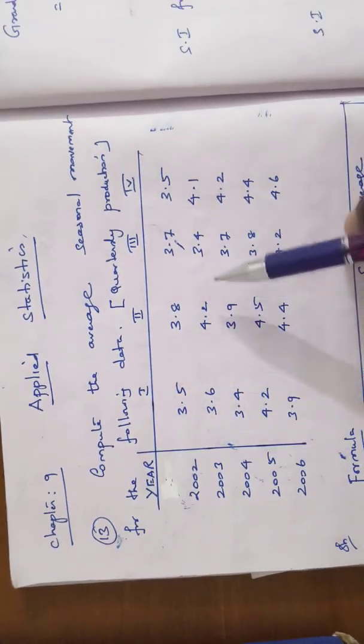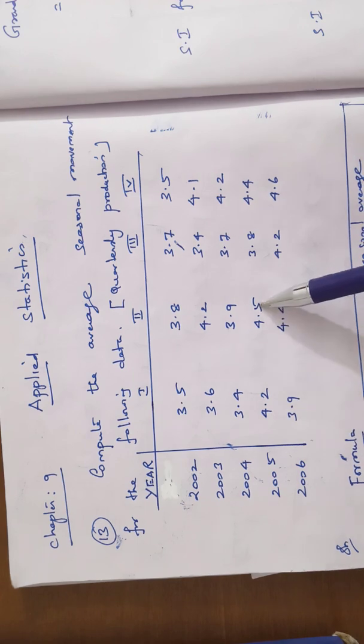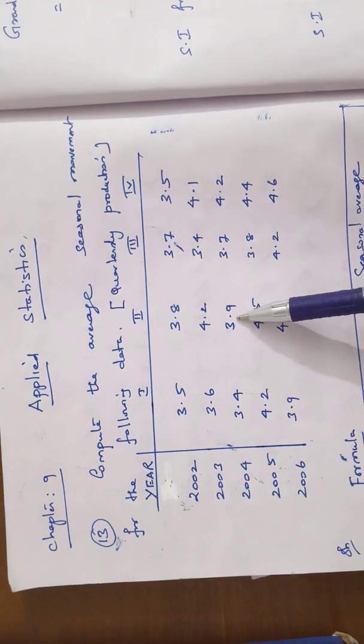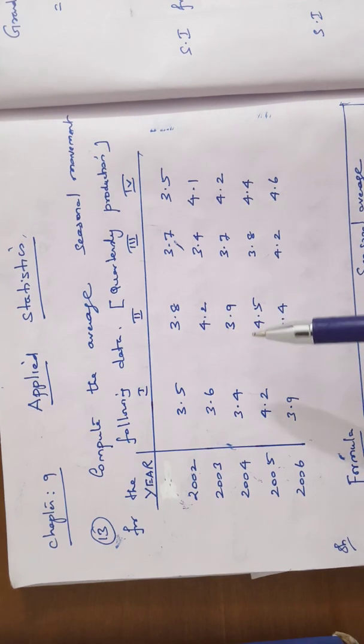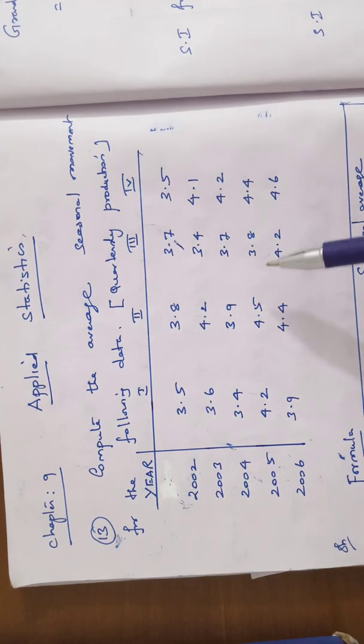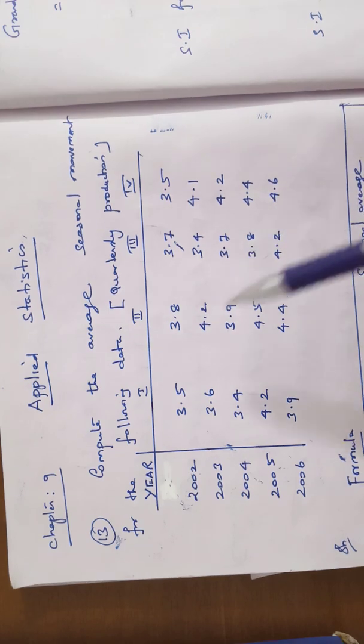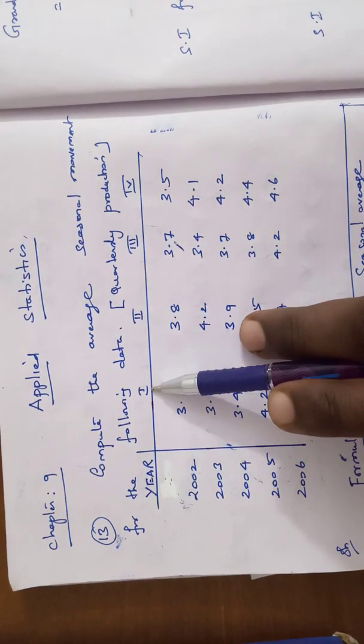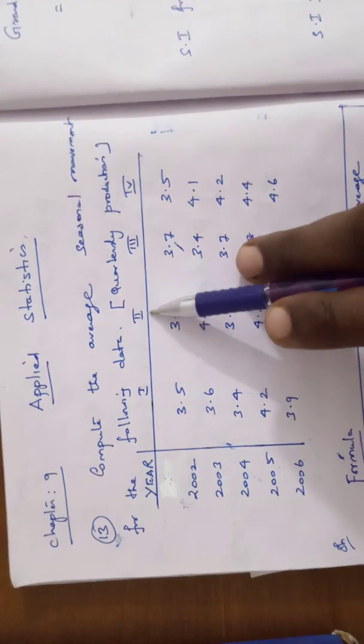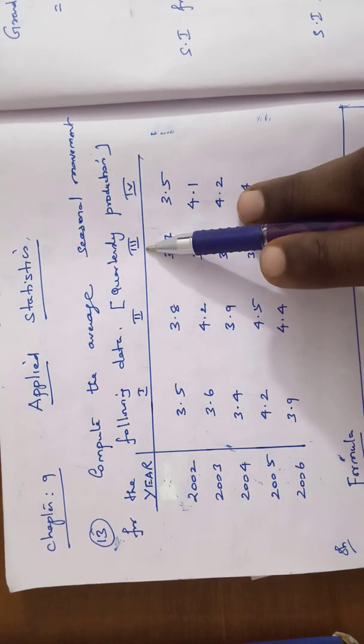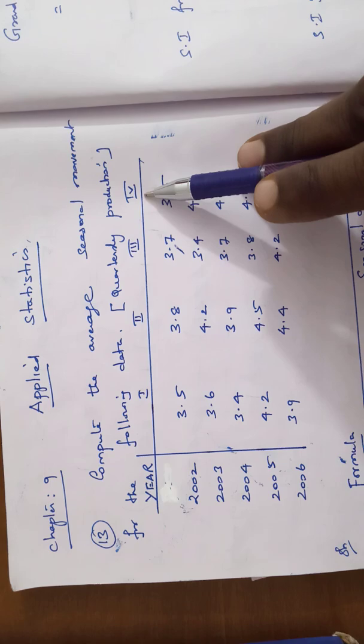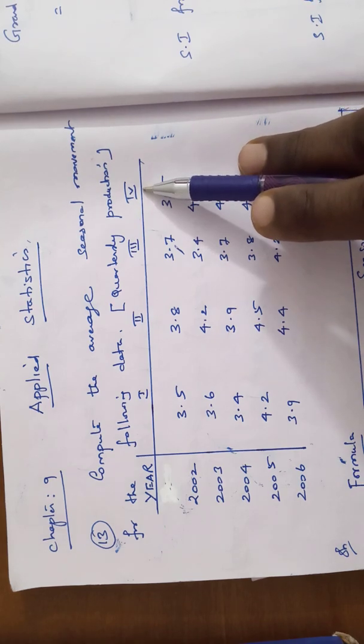In the entire year 12 months can be split into four quarters. Four quarters means 3 plus 3 plus 3 plus 3. The first three months is the first quarter, next three months is the second quarter, next three months is a third quarter, and the last three months is a fourth quarter.